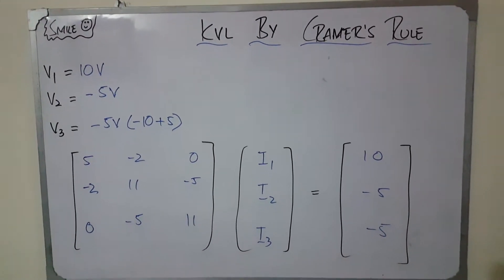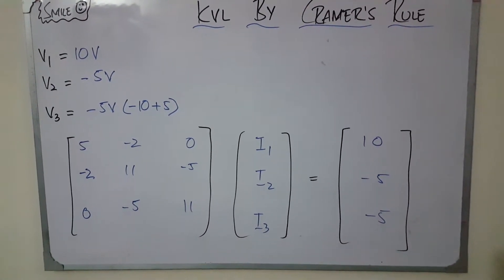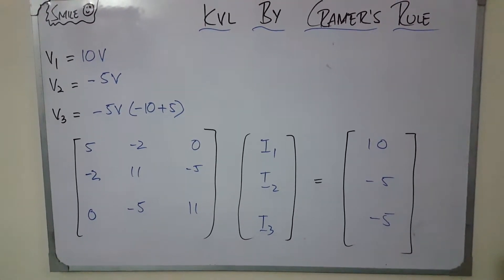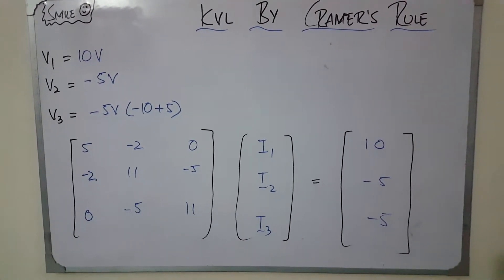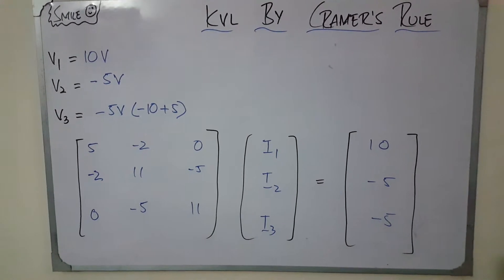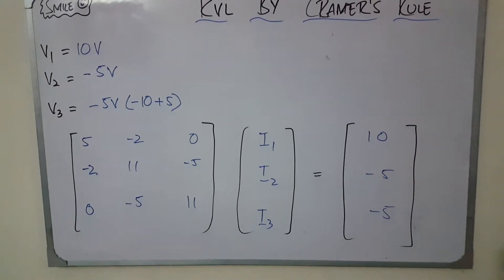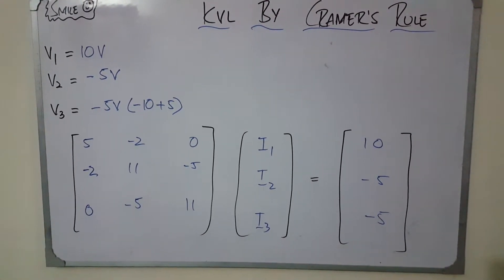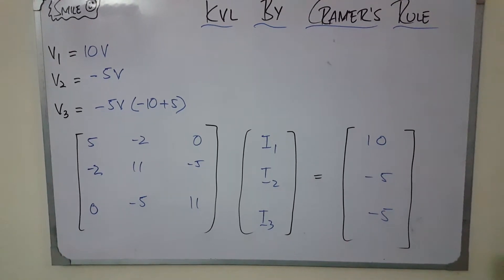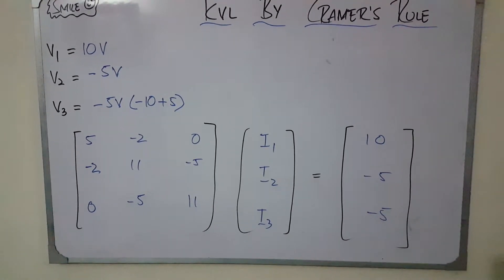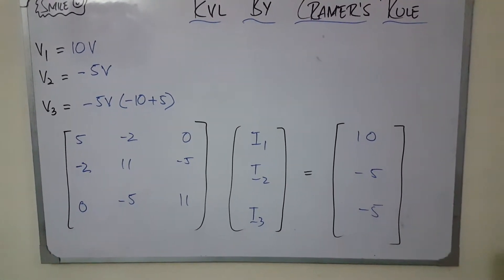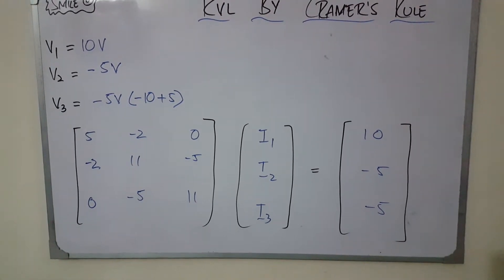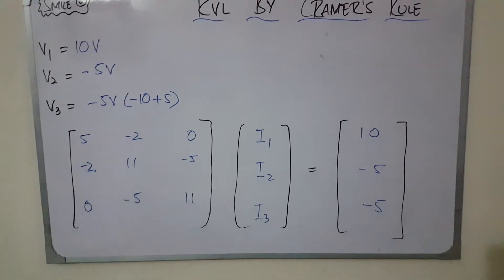Now setting up the matrix: the resistance matrix contains values five, minus two, zero; minus two, eleven, minus five; zero, minus five, eleven — all coming from R11 through R33. We are going to find I1, I2, and I3. The voltage column matrix has values ten, minus five, minus five from V1, V2, and V3.